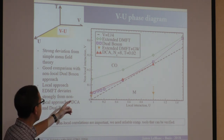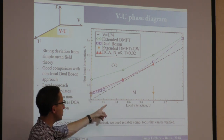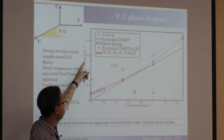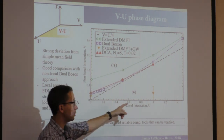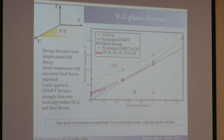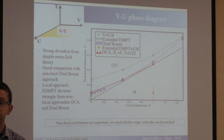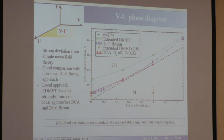At some point you say: okay, we think we have some control over what we're doing. Let's start doing comparisons to other numerical techniques and gain an understanding of how well we do. This is a plot in the V-U plane — non-local interaction on one axis, local interaction on the other — showing where you go from charge ordering to metallic.